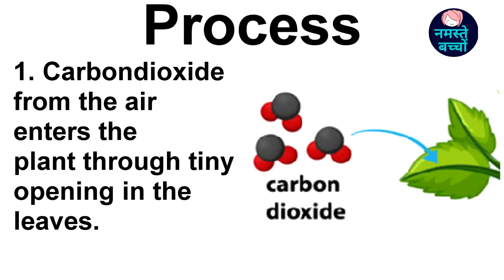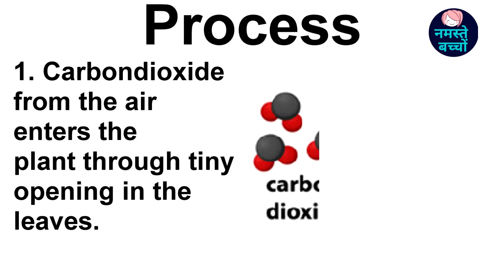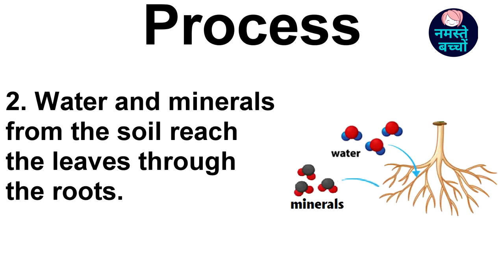First, carbon dioxide from the air enters the plant through tiny openings in the leaves. Second, water and minerals from the soil reach the leaves through the roots.